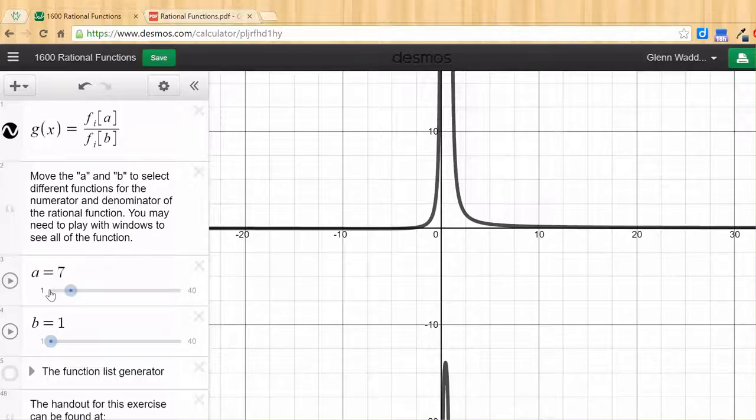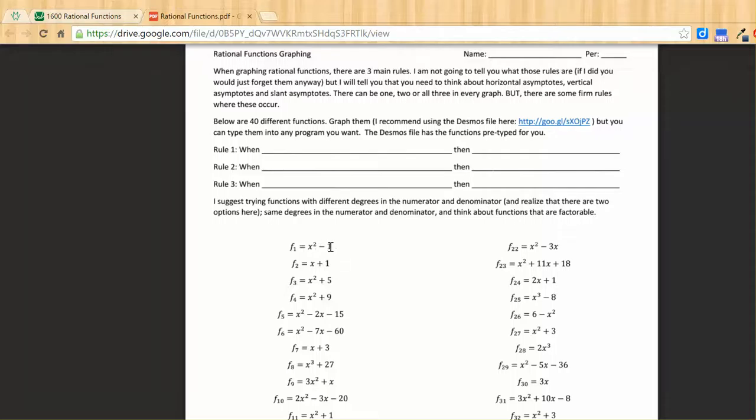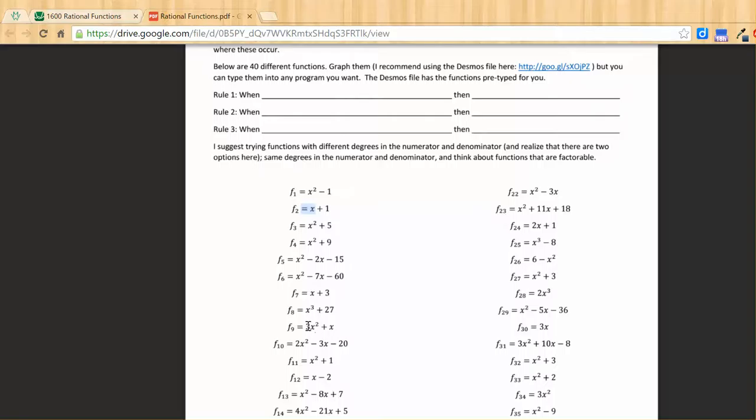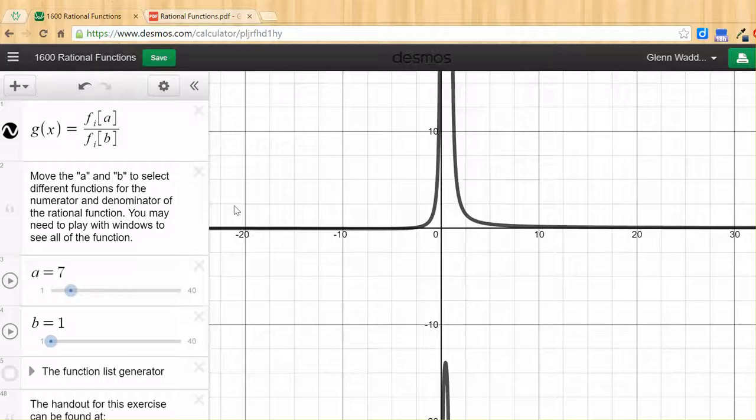And here's the hint. You're looking at the degree of the numerator and the degree of the denominator. And you're looking at the coefficient of the numerator and the coefficient of the denominator. So it's not going to be the minus 1 or the plus 1. It's going to be the x squared and the x. Or it's going to be the 3x squared and the 2x squared. Or the x cubed. You're looking at using degrees and coefficients to determine what the rules are